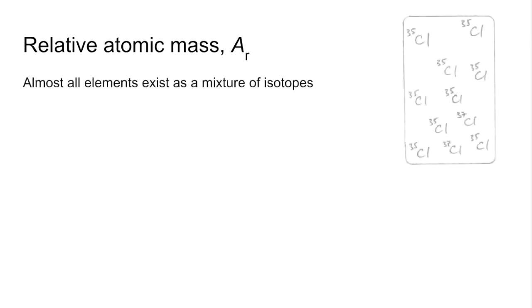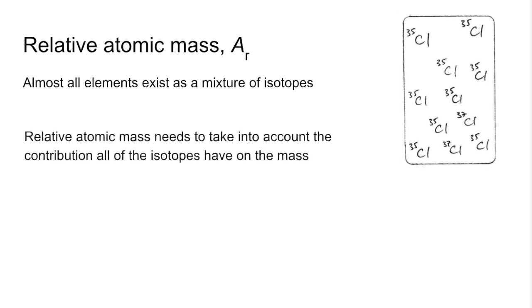So moving on to relative atomic mass now. Almost all elements exist as a mixture of isotopes. So in the case of chlorine, we've got chlorine-35 and chlorine-37 isotopes, and you can see there are far more 35s than 37s. So the relative atomic mass needs to take into account the contribution all of the isotopes are having on the overall mass, the average mass.